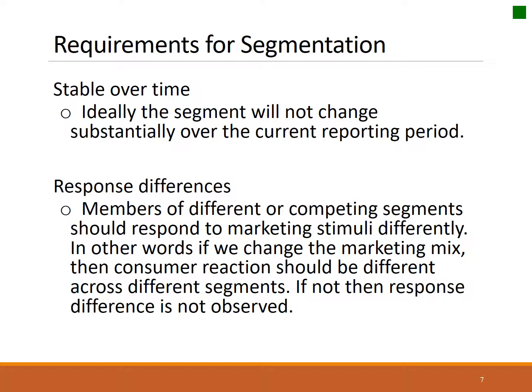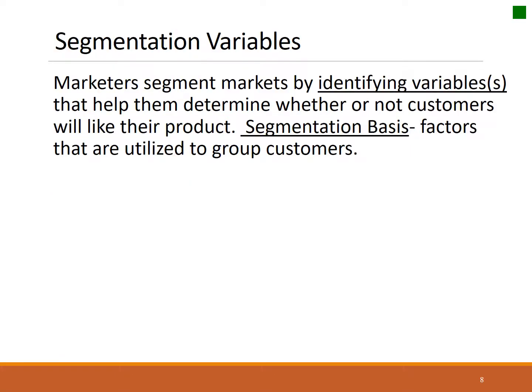When we talk about the segmentation process, generally speaking, we do market research to identify different characteristics that consumers have, and then we track to see which consumers are most likely to buy our products. Or we look at consumers who are currently buying our products and see what makes them special and unique, forming a market segment around those who are our customers. So we look for identifying variables.